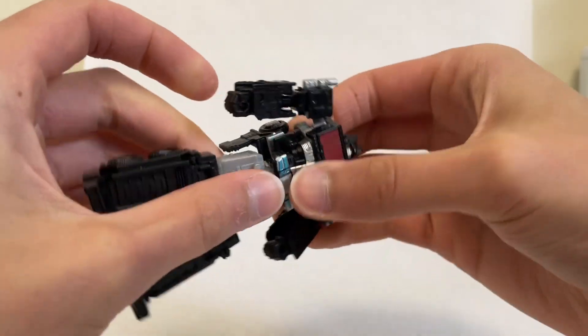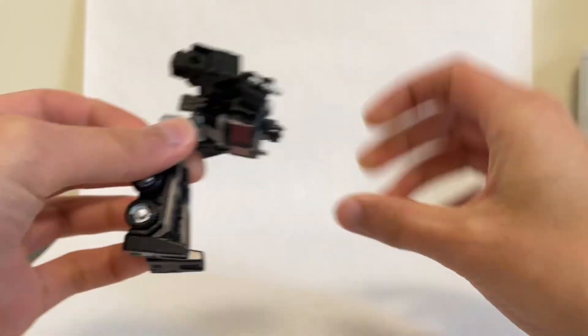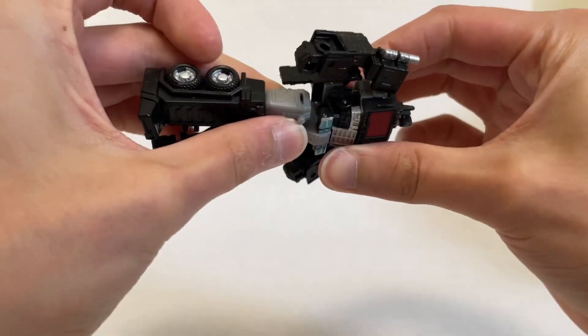And then nothing at the waist in terms of waist articulation, though you can kind of exploit the transformation joint. And you can get him crunching to that degree. So that's pretty awesome.